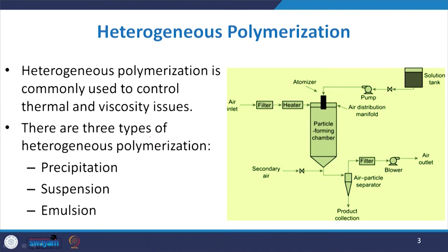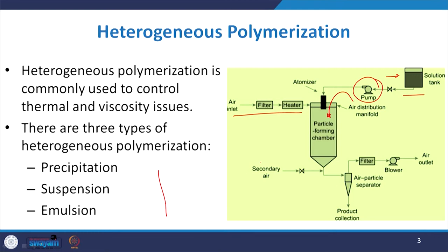This is a broad sketch or rough diagram of the heterogeneous polymerization process. Here you have a solution tank in which you form the solution. With the help of a pump, it is carried to the particle forming chamber. Initially, the substrate may be in the form of a homogeneous system, but once introduced to the particle forming chamber with air inlet or other supporting materials, it may convert into small tiny particles. With the help of atomizers, it creates small droplets suspended in the chamber.